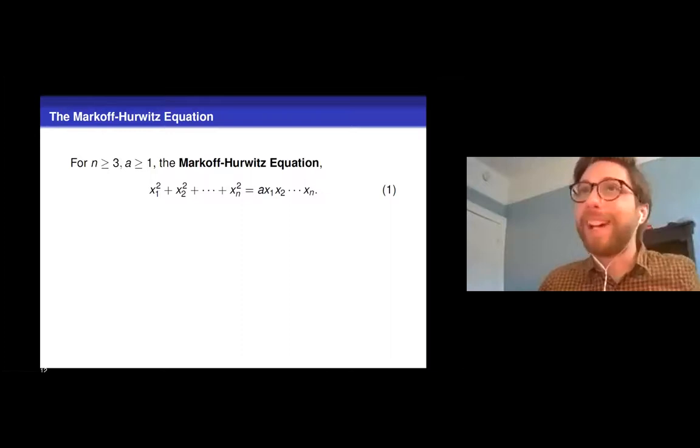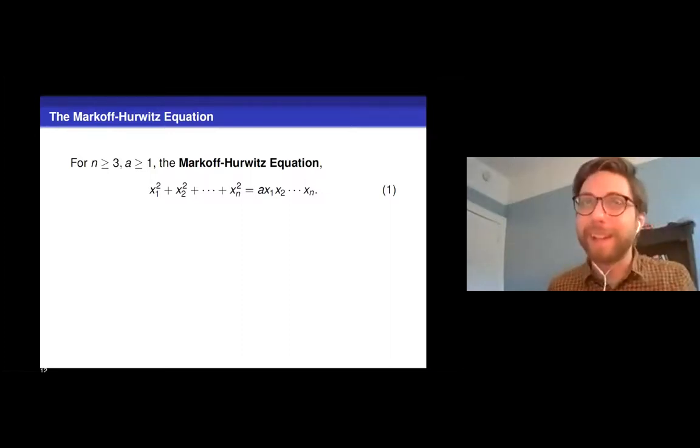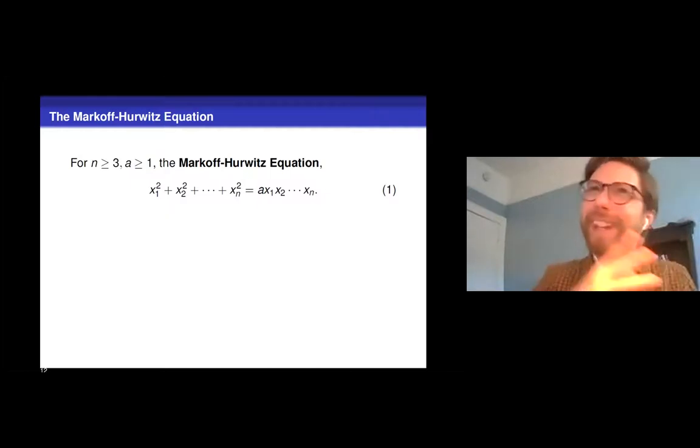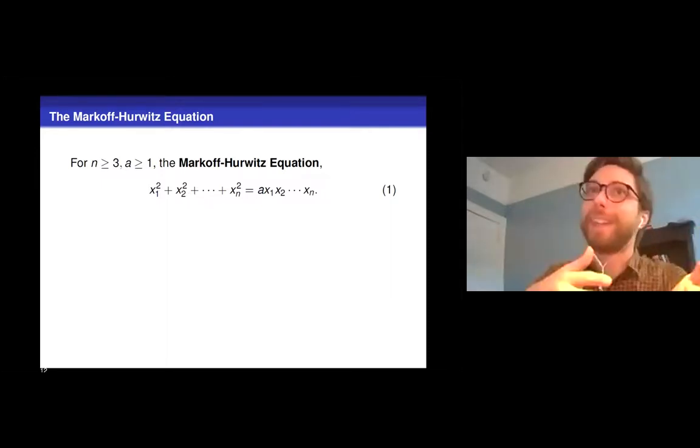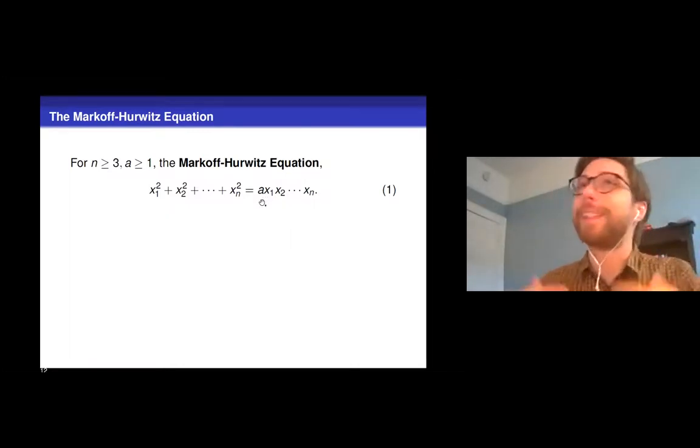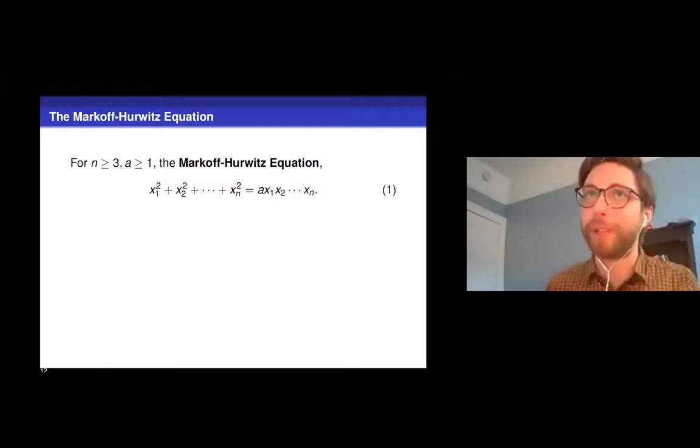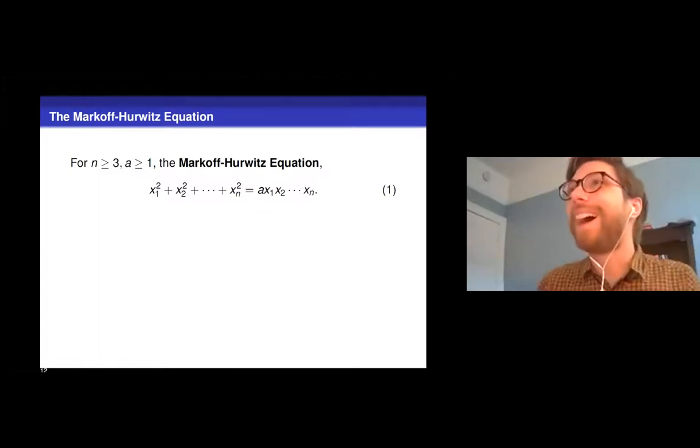When a is equal to n, we can quickly see that that nice example that was staring us in the face earlier easily generalizes to this n variable setting, right? One squared plus one squared n times is equal to n times 1, 1, 1, 1, 1. So if a is equal to n, this has at least one solution, the solution where all of the coordinates are equal to one.